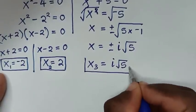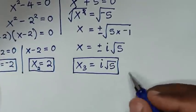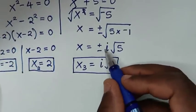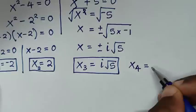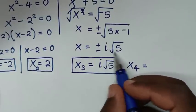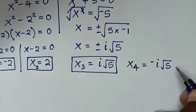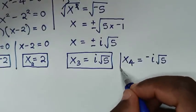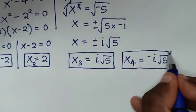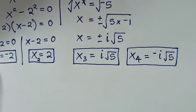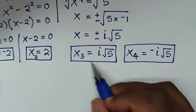The third value of x is i√5, and the fourth value of x is -i√5. These two values of x are complex values.